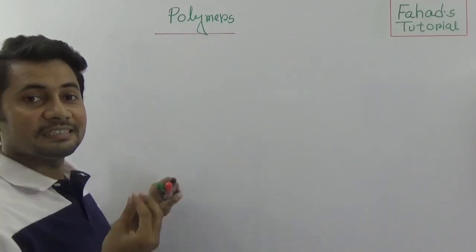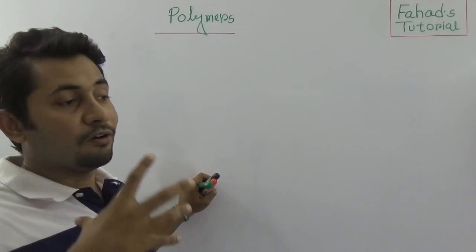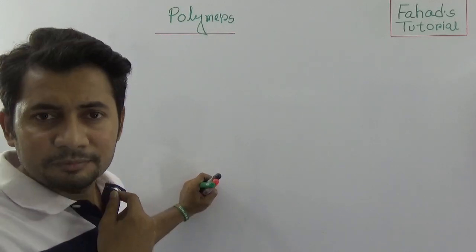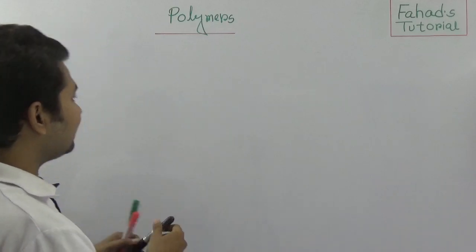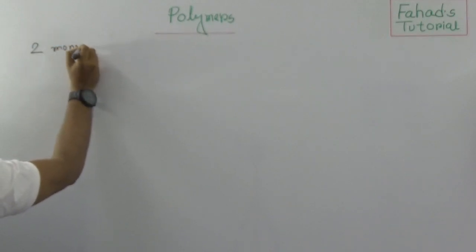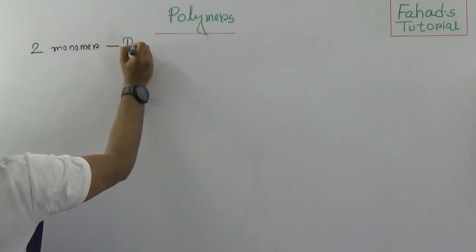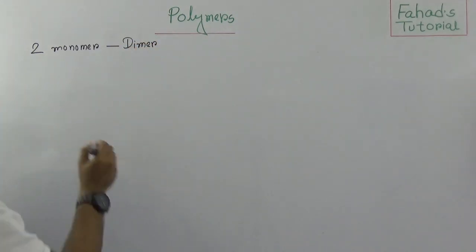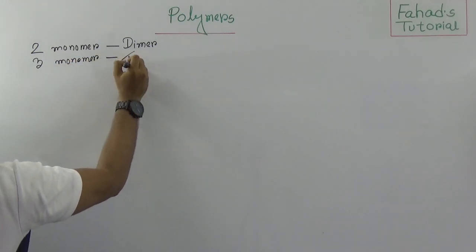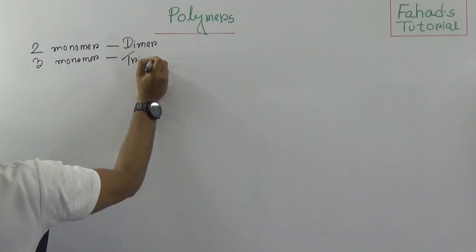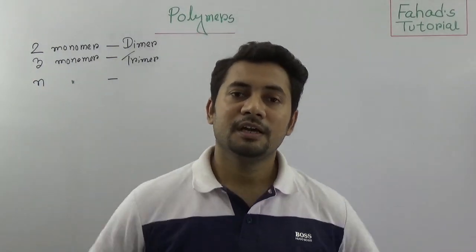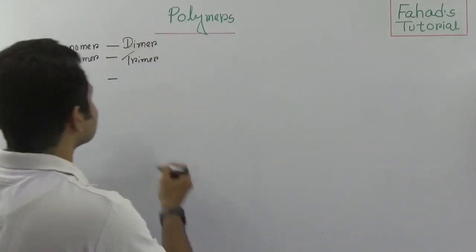A polymer is a large molecule made up of innumerable tiny molecules, or monomers. If two monomers are attached together, we call this a dimer. When three monomers are attached together, we call this a trimer. And when an n-number of monomers — with no specific limitation — are attached together, then this is a polymer.